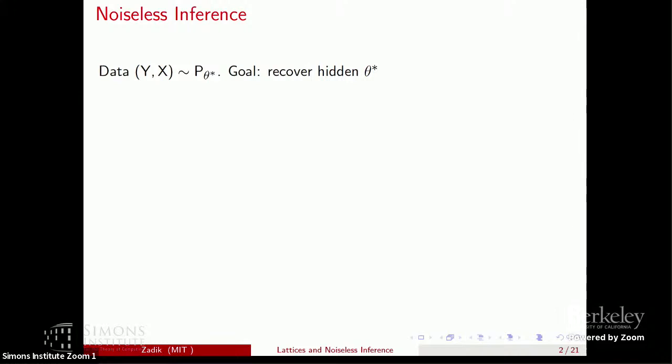This will be a theory talk, but let's make sure we're on the same page about some definitions. What is noiseless inference? Generally, in parametric inference, we observe samples from some parametric distribution, and there exists a hidden parameter — a hidden structure — that we're trying to recover. We want to do this optimally, with optimal resources. There's some signal-to-noise ratio, some measure of how strong the signal is in this noise environment.